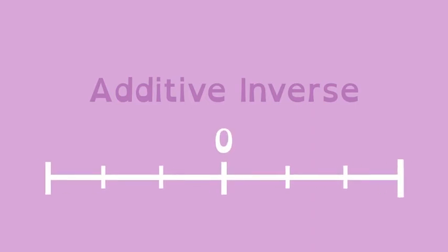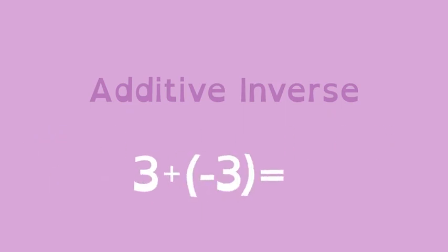That's Additive Inverse, a number that is the same distance from zero on the number line, but in the opposite direction. When you add them together, you get a big fat zero.